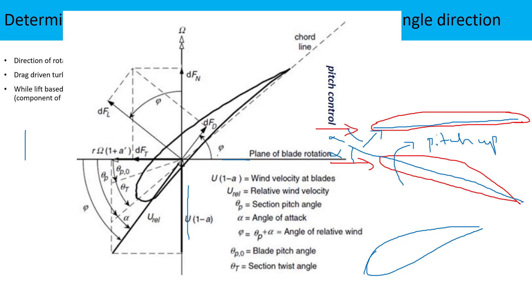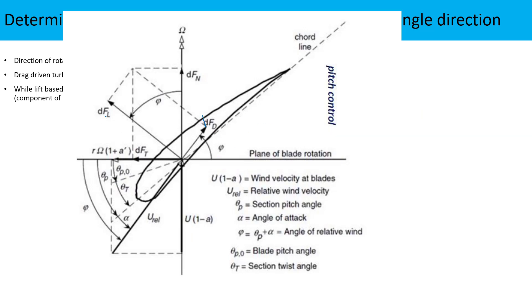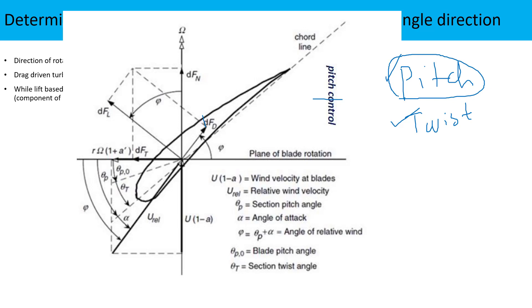There are two things to discuss: pitch angle and twist angle. The difference between them is that pitch and twist are essentially the same rotation, but pitch angle is applied uniformly to the whole wind turbine blade — all sections experience the same rotation. If we give the same angle to all sections that is the pitch angle. If each section along the radius is given a separate, different angle, that is the twist angle.